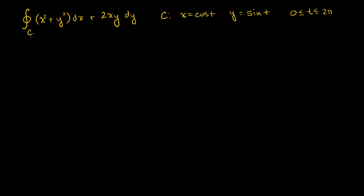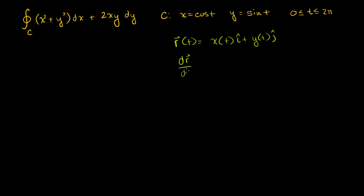You might say, this looks like a line integral but you have a dx and dy — I don't see a dot dr here. It's not clear that this is a vector line integral. What I want to show you is that this is just another form of writing a vector line integral. If we have r of t equal to x of t times i plus y of t times j, we've seen that dr/dt equals dx/dt times i plus dy/dt times j.